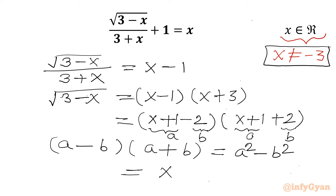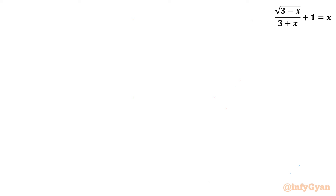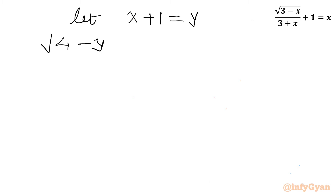So I will be writing (x plus 1) whole squared minus 2 squared, which is (x plus 1) squared minus 4. On the left-hand side, square root of (3 minus x) — we can write this as square root of (4 minus (x plus 1)), so that we can use substitution. Let x plus 1 equal y. Our equation will become: square root of (4 minus y) equals y squared minus 4.